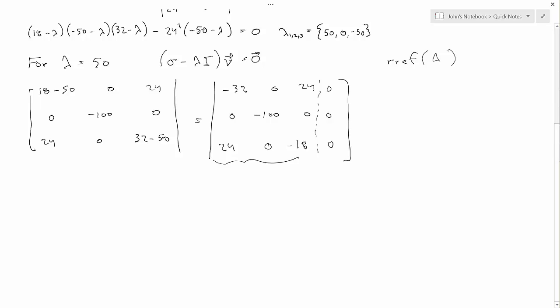Anyway, this is not that hard. I'm going to do one at a time because I think this is where a lot of people got confused. I'm going to take 1/24th of row 3. So I have 1, 0, minus 3/4ths, 0, minus 100, 0, minus 32, 0, 24.